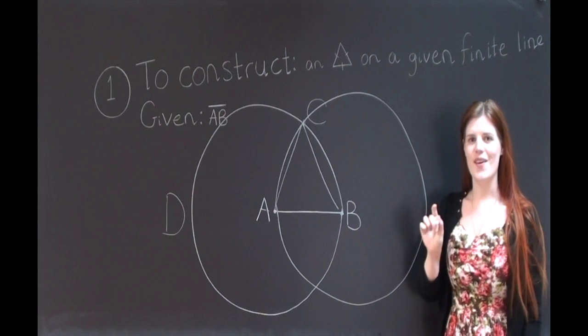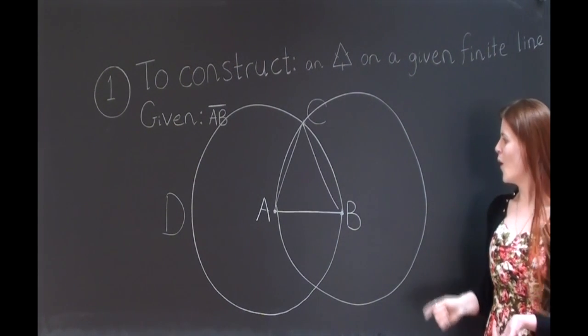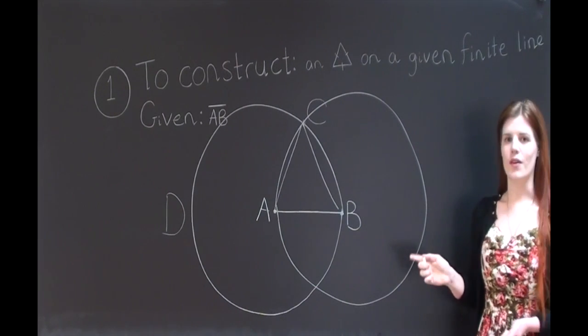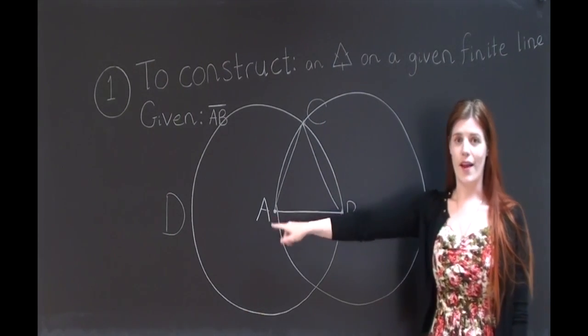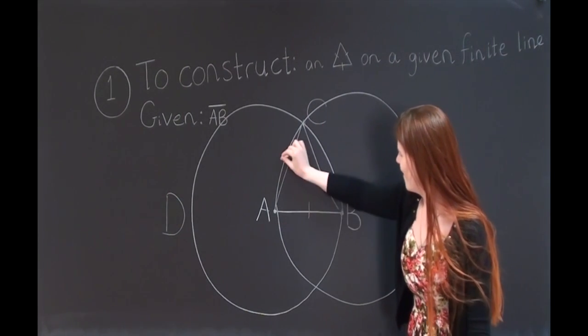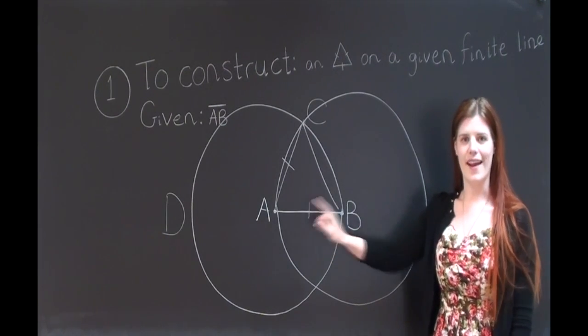Alright, because of Definition 15, which gives us the definition of a circle, we know that the radii of a circle are going to equal one another. So first of all, we know that line AC is going to equal line AB, and also that line CB is also going to equal line AB.